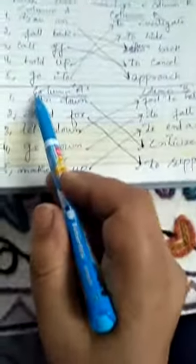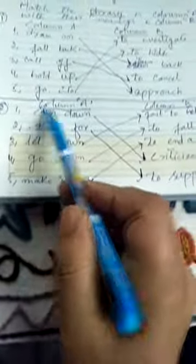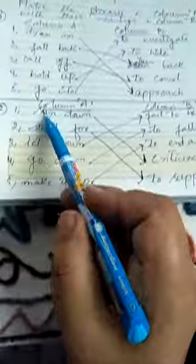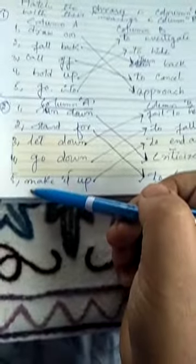Aise hi doosra yeh example mein aap ko dungi that is, is mein words diya gaya hain to is mein un ki meanings diya gayi hain. To first is run down, run down means criticize.